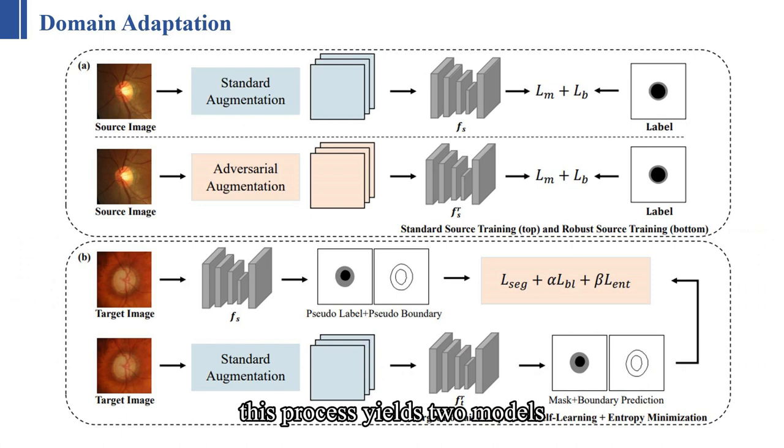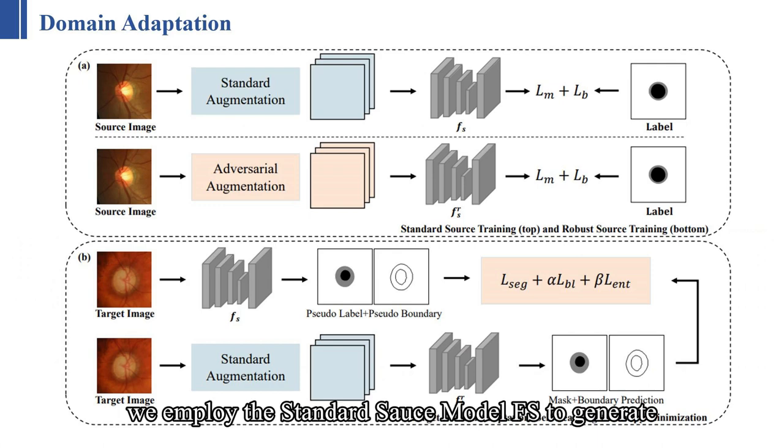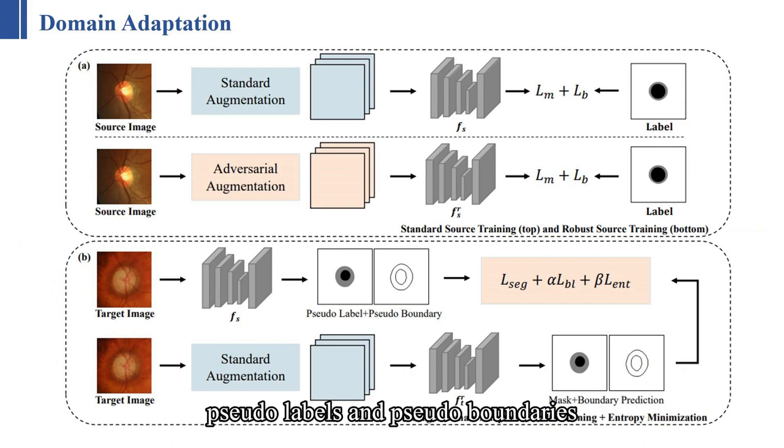This process yields two models: FS, the standard source model, and FSR, the robust source model. In the target adaptation stage, we employ the standard source model FS to generate pseudo-labels and pseudo-boundaries.